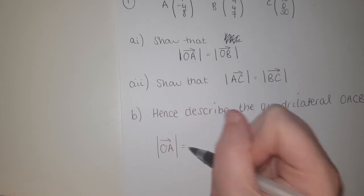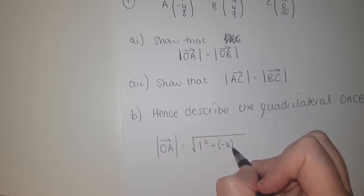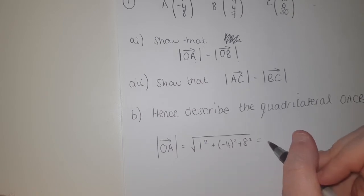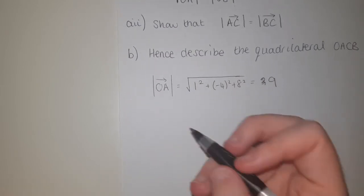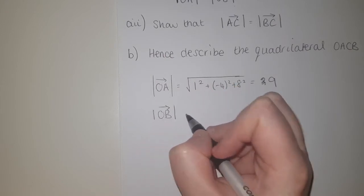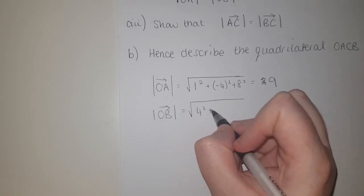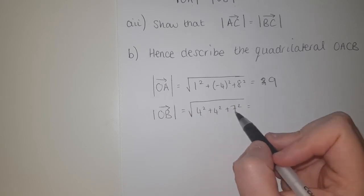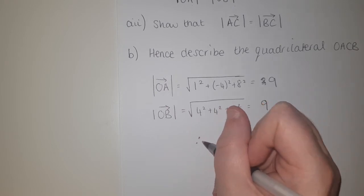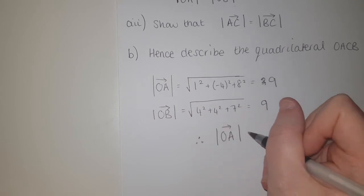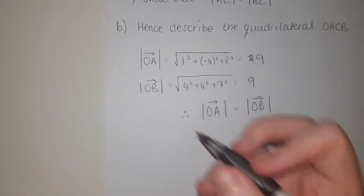So the length of OA is the square root of 1² + (−4)² + 8², which gives 9. Then for OB — and you do need to show these steps, a few people just wrote 9 — OB is √(4² + 4² + 7²) = √(16 + 16 + 49) = √81 = 9. Therefore, the length of OA equals the length of OB. That's part A question 1 done.